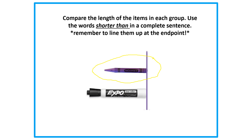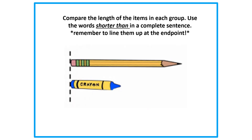If you agree, I'd like to know why you agree. And if you disagree, I'd also like to know why you disagree. Now we're going to compare the length of the items in each group. Use the words 'shorter than' in a complete sentence. Remember to line them up at an end point. I see that I've already lined mine up at an end point right here, which means that we can accurately compare these objects because they're lined up at an end point.